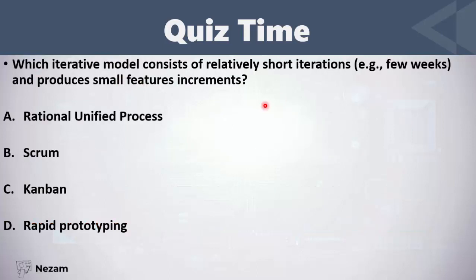Which iterative model consists of relatively short iterations of a few weeks and produces small feature increments? Rational Unified Process, Scrum, Kanban, or Rapid Prototyping? It is, of course, Scrum.